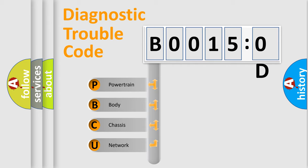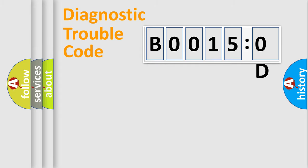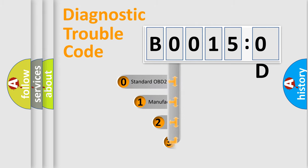We divide the electric system of automobile into the four basic units: Powertrain, Body, Chassis, and Network. This distribution is defined in the first character code.